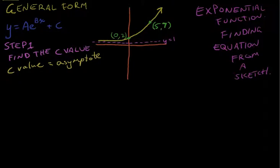So we can write at least part of our formula now. We know that y equals Ae to the Bx plus 1. Now we just need to find A and B.